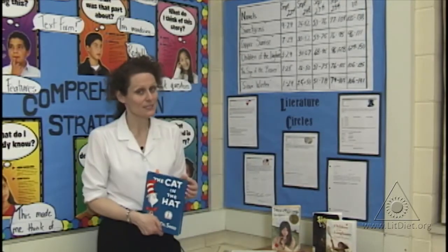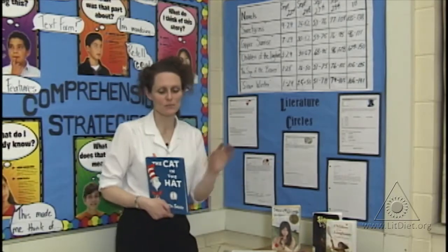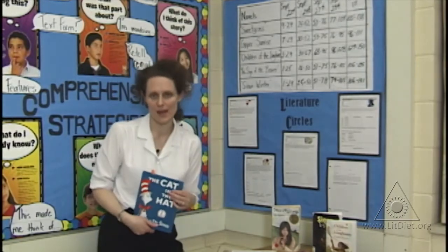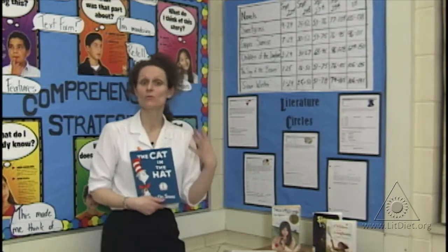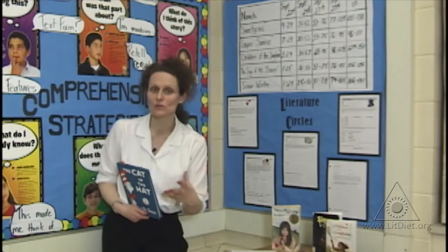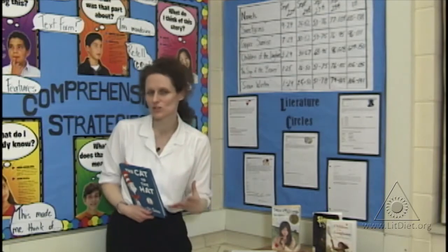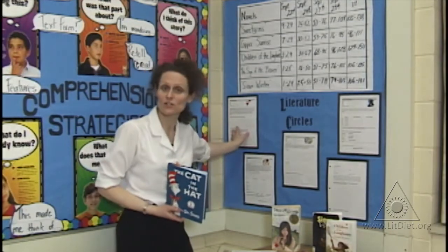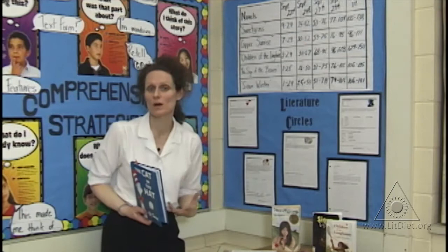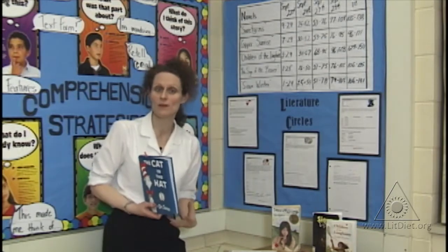One of the ways I like to teach how to do each of these jobs is to give them a familiar text. I've chosen The Cat in the Hat. I read the text and then we analyze it. I ask the children to listen to the story and imagine that they are the discussion director. If you were the discussion director, you have to generate really good questions that would help facilitate discussions in your group when they meet.